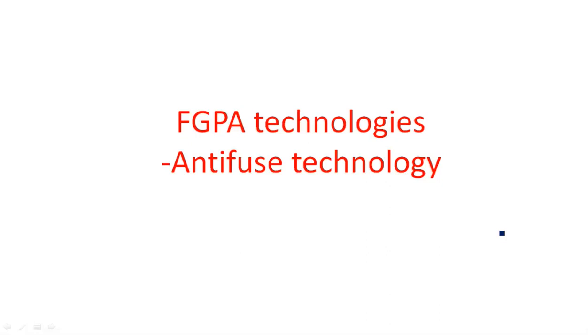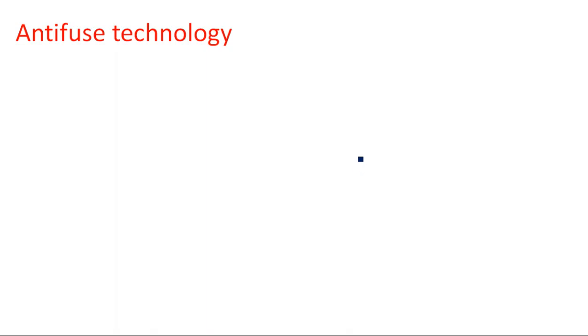In this video I am going to explain about the anti-fuse technology, which is the second type of FPGA programming technology. Previously we have seen SRAM programming technology, which uses a six-transistor programming method where transistors turn on and off depending upon the input condition. It uses two CMOS transistors connected back-to-back, one pass transistor, and a bit line.